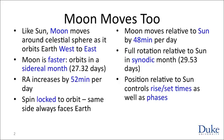The moon moves to the east along the celestial sphere by about 52 minutes per day. The sun also moves to the east, but much more slowly — about four minutes per day. The difference, 52 minus 4, gives us 48 minutes per day. This is the relative motion of the moon relative to the sun: the moon is 48 minutes farther east relative to the sun each day than it was the day before.